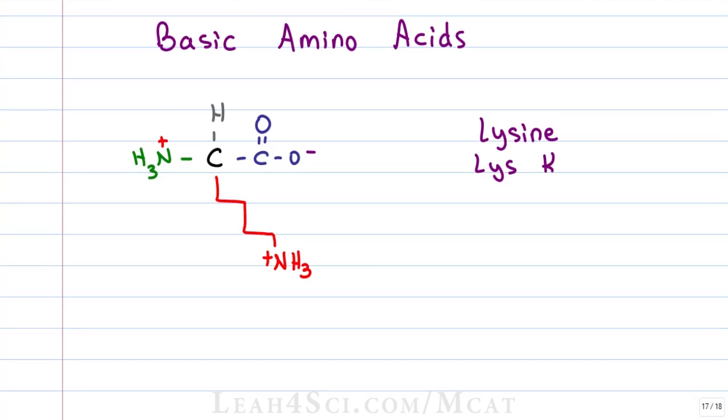There are three basic amino acids. We'll start with lysine, which is LYS or K. Notice that we have four carbons in the side chain, so that's CH2, CH2 all the way down, and NH2, which is protonated at physiological pH to give us NH3+. This is the conjugate acid of the basic side chain.